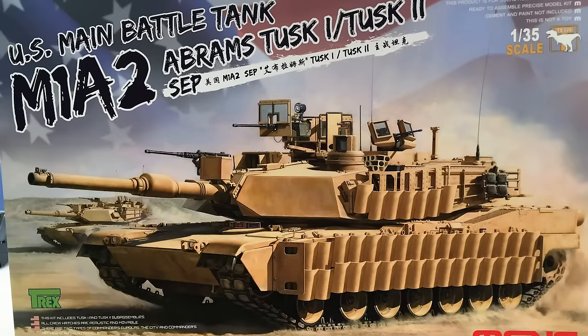What we'll take a look at is Meng's M1A2 Abrams, the Tusk 1 slash Tusk 2 edition. This kit retails for about $90 in the United States, and there again, you can get it in the 70s. The kit has quite a few parts and some nice detail to it, so let's, for the first thing, take a look at the tracks.